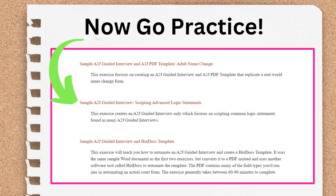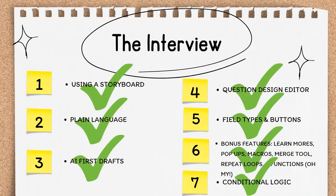Now go practice. There's a sample exercise devoted to scripting advanced logic statements. It can be found in the Applied Workflow section of this training or in the Learn section of our website a2jauthor.org under the sample exercises. That concludes the training on conditional logic and finishes out section 3 of this series focused on the interview. You should now have the skills necessary to create a storyboard based on your forms and templates, run that script through a plain language edit perhaps with the help of AI, then take that script and turn it into a well-built A2J guided interview using the tools in the Question Design Editor in A2J Author. Congratulations on finishing this section — you're almost done. The next section will focus on what to do with your A2J guided interview when you're all done with drafting and it's almost ready for prime time.